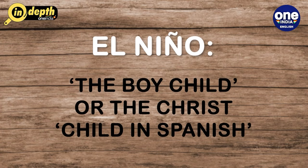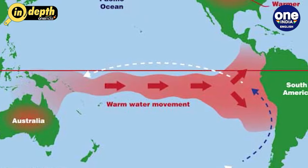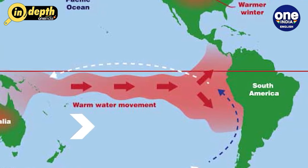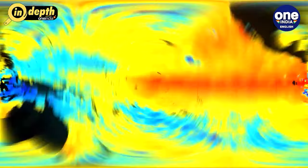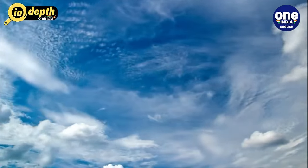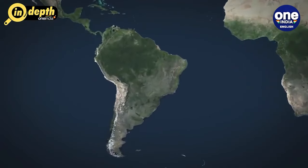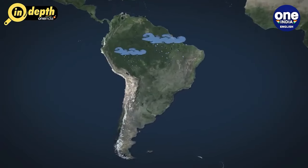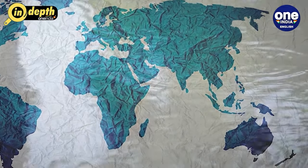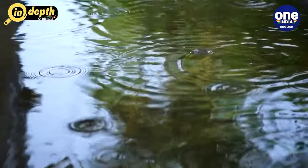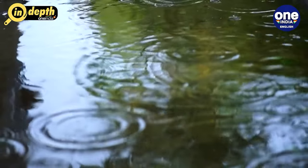The term El Niño means 'the boy child' or 'the Christ child' in Spanish, as it affects oceanic currents during Christmas. El Niño occurs when warm ocean water in the central and eastern Pacific moves eastward towards South America. This warm water causes changes in atmospheric circulation, leading to changes in weather patterns around the entire world. During an El Niño event, parts of South America experience very heavy rainfall, while parts of Asia and Australia may experience drought conditions. Whenever the Indian subcontinent receives less rainfall, it is usually because of El Niño.